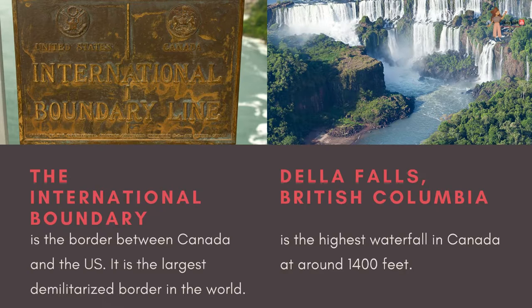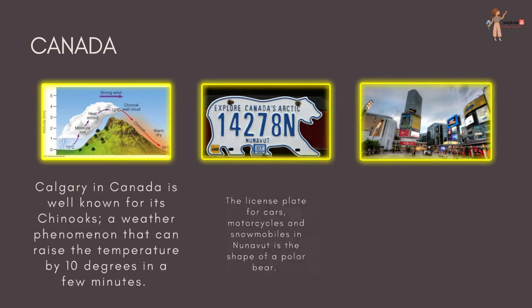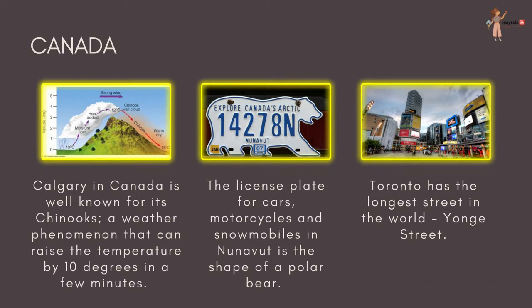The international boundary between Canada and the US is the largest demilitarized border in the world, meaning there is no army standing between the two countries. Dela Falls in British Columbia is the highest waterfall in Canada at around 1,400 feet. Calgary is well known for its Chinooks, a weather phenomenon that can raise the temperature by 10 degrees in a few minutes. The license plate for cars, motorcycles, and snowmobiles in Nunavut is in the shape of a polar bear. Toronto has the longest street in the world — Yonge Street.